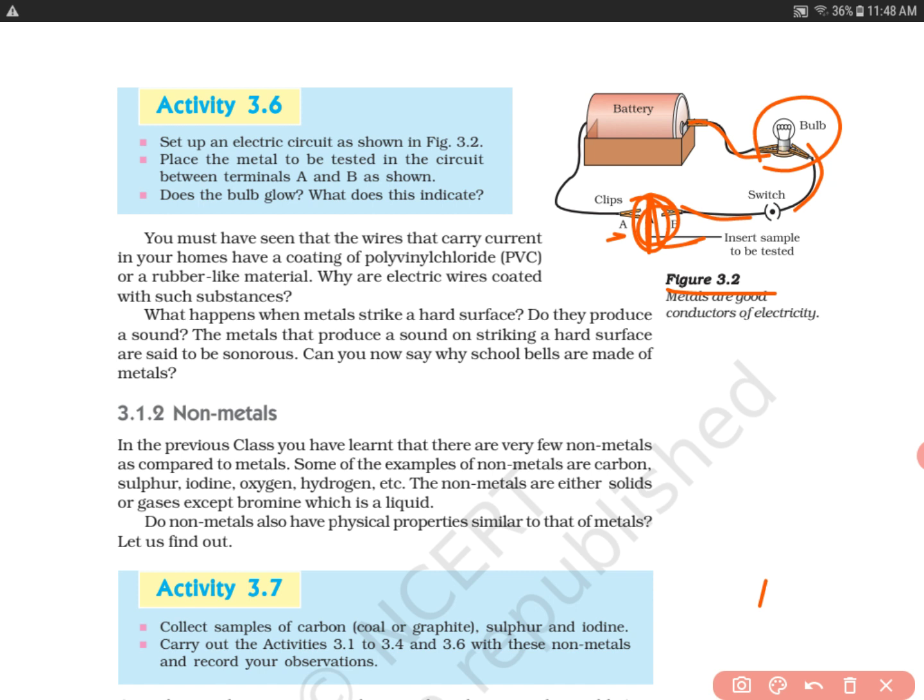Now you must have seen that wires that carry current in your homes have a coating of PVC - polyvinyl chloride, this short form you should know - or a rubber-like material. Why are electric wires coated with such substances?